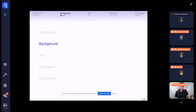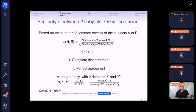I have to start by a background with some tools, since you have to understand these tools before I present the test. So the similarity between two subjects is defined here by the Ochiai coefficient, which is based on the number of common checks. And more generally, with two datasets, the Ochiai coefficient is simply the cosine between these two datasets: the scalar product divided by the two Frobenius norms.